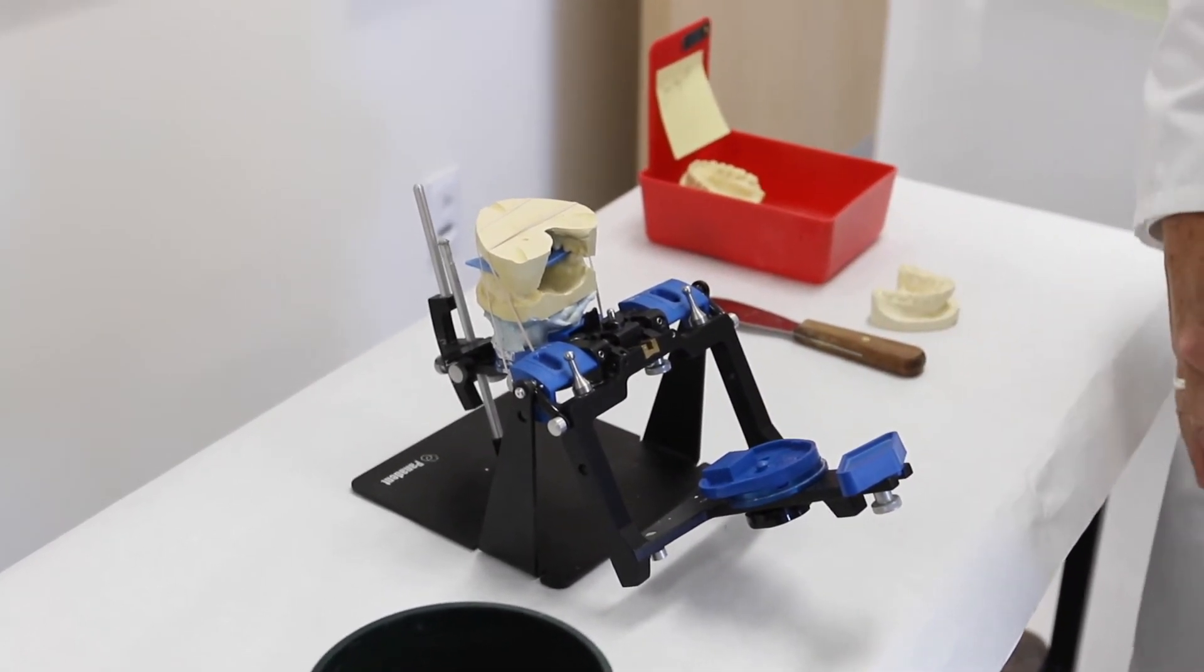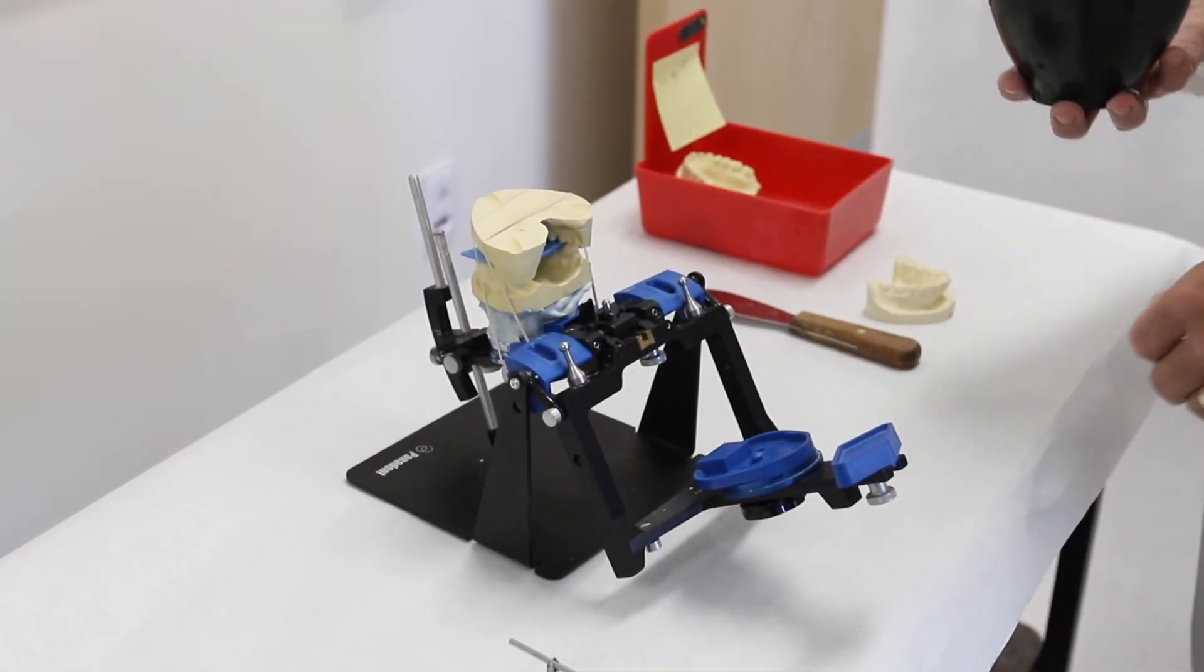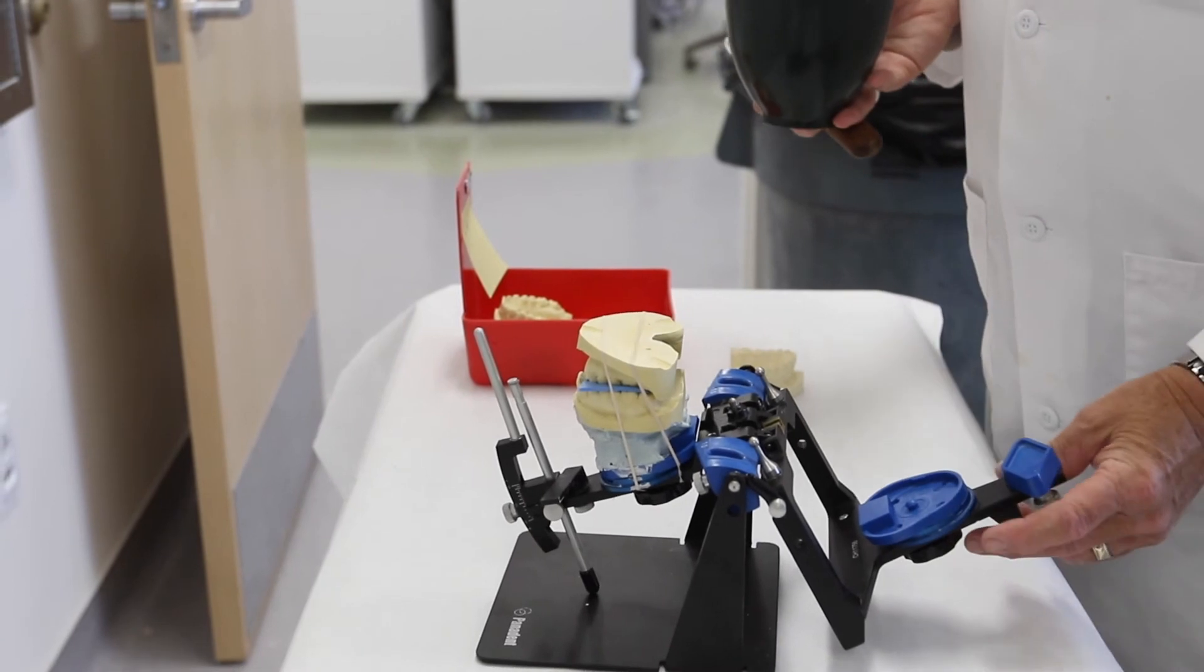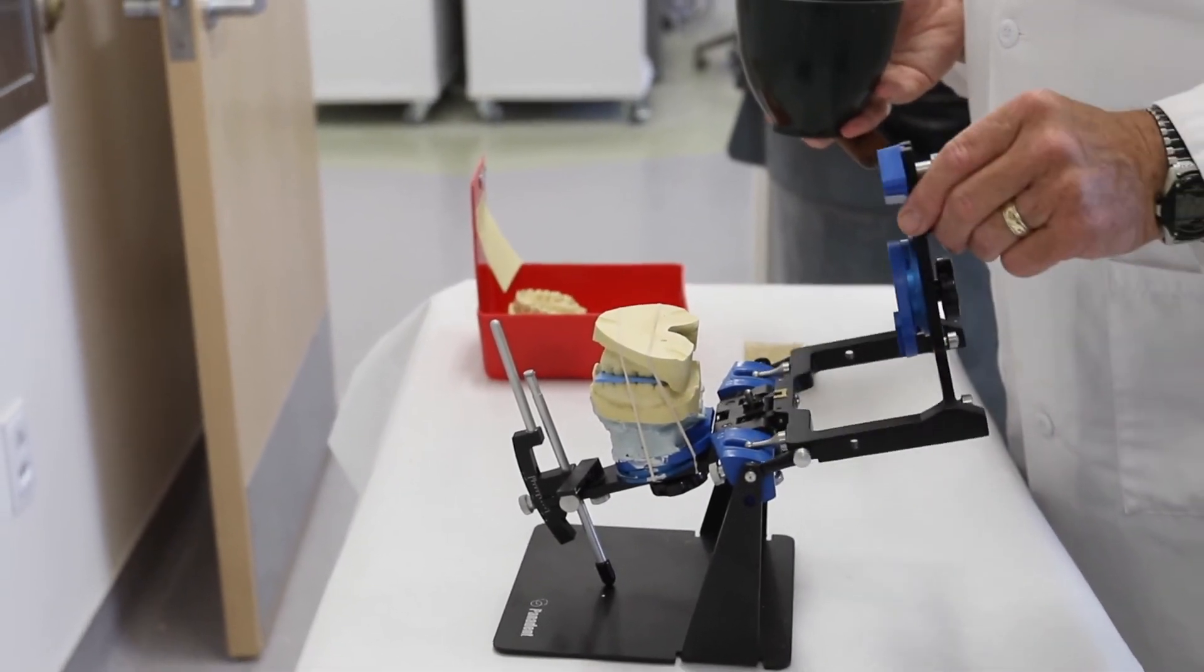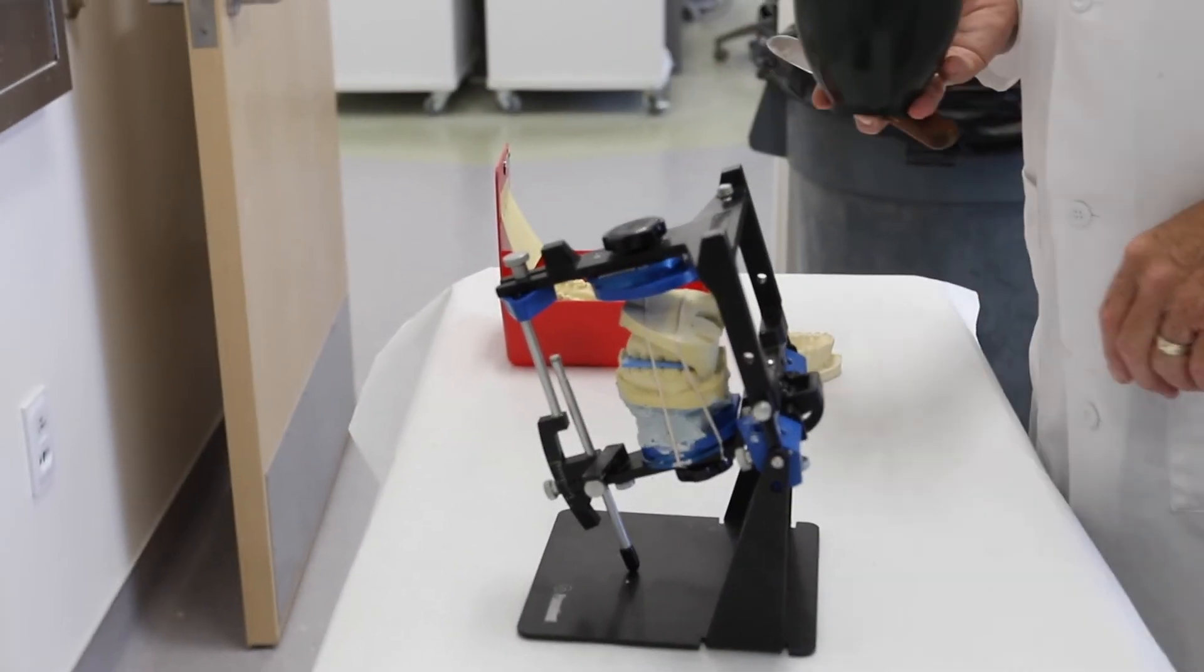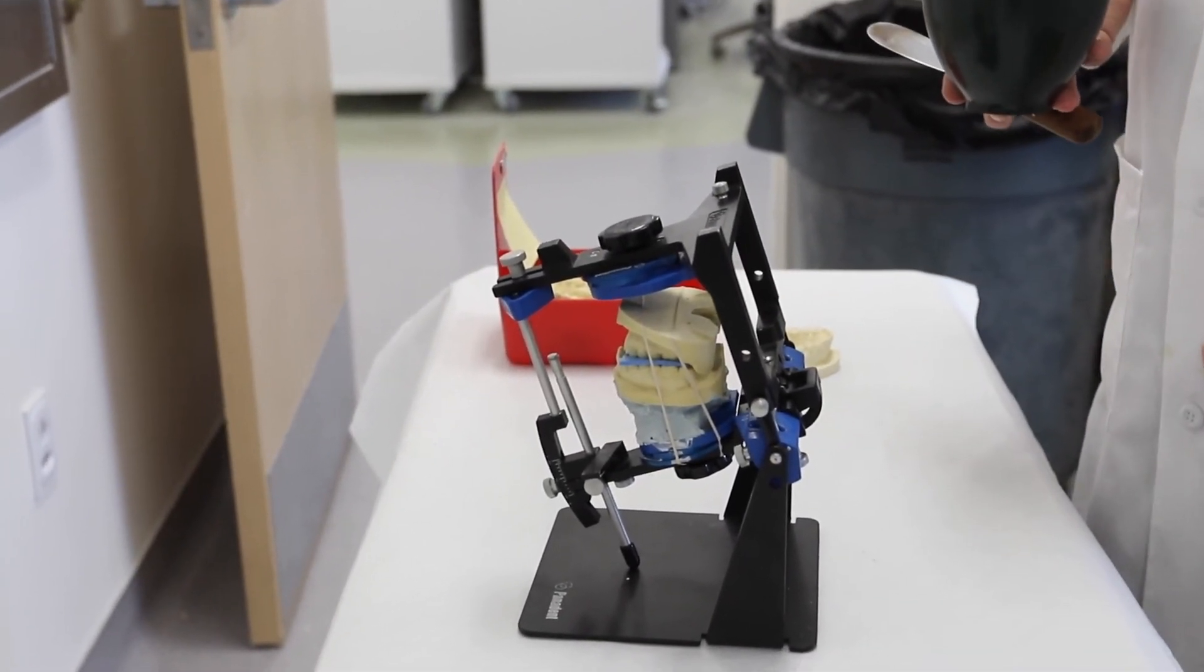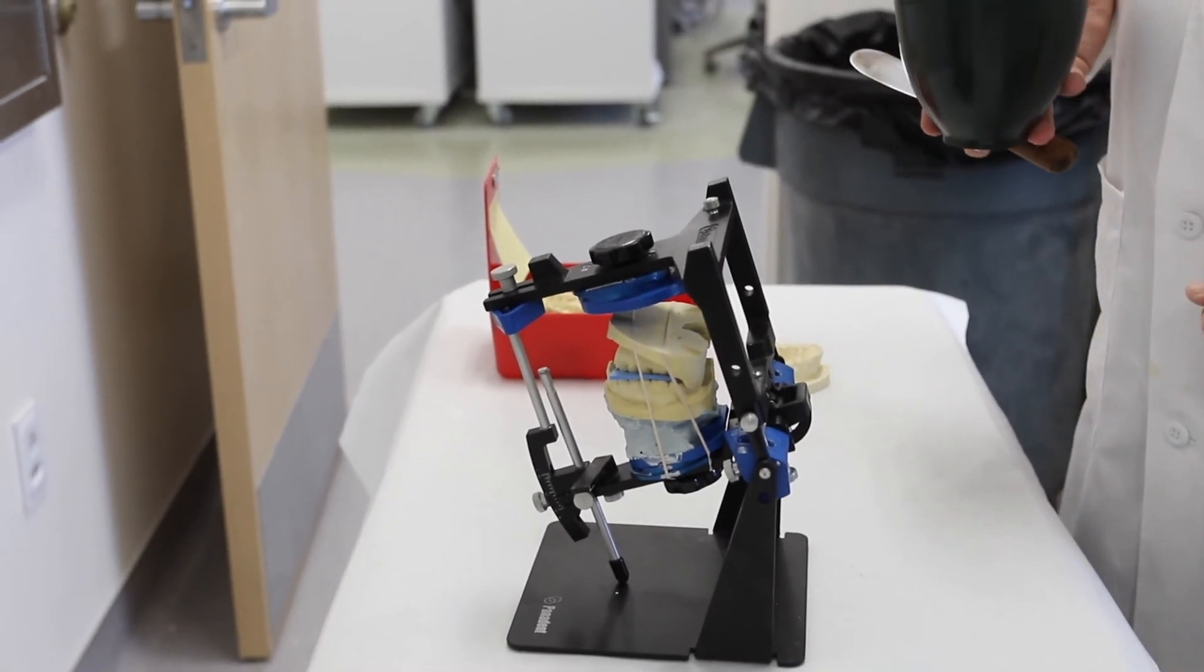We're now ready to add the mounting stone so we'll mix that up and also demonstrate how that is done. At this point it's also a good idea to estimate how much mounting stone is going to be needed to put the mounting stone into the gap that remains between the mounting plate and the lower model.